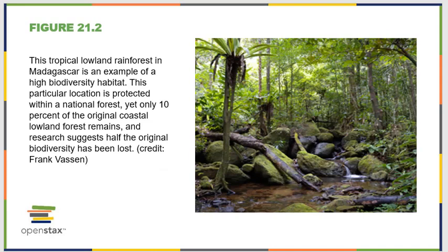The lowland tropical rainforest shown here is an example of a really high biodiversity habitat. This particular location is protected within a national forest, but only about 10% of the original coastal lowland forest remains, which means we've already lost half of the naturally occurring biodiversity in this region. We're making gains, but it seems like we're losing more than we're gaining — it's definitely two steps back and one step forward rather than the other way around.